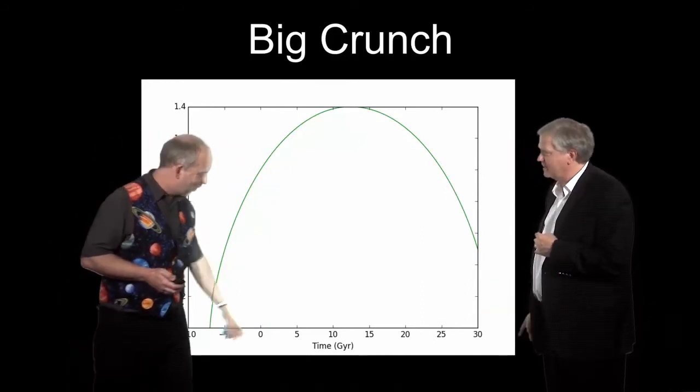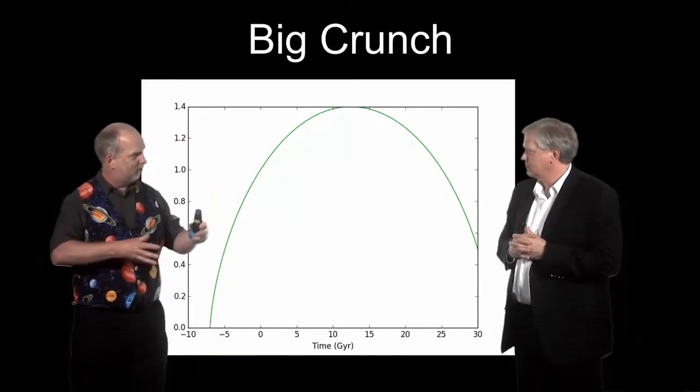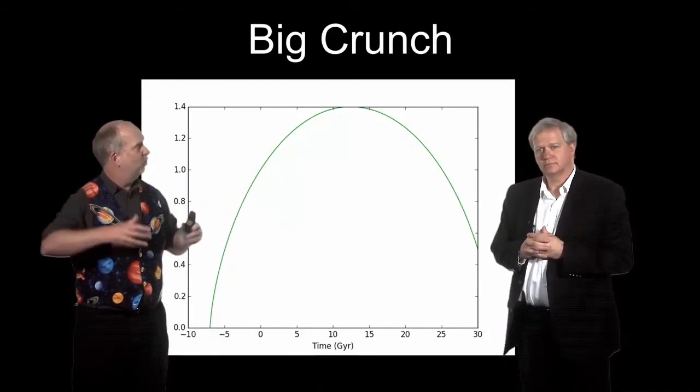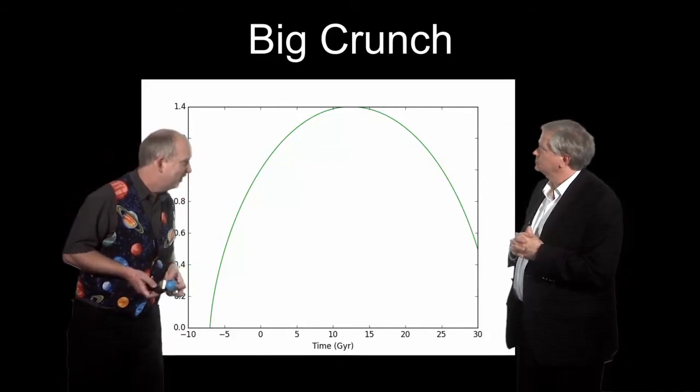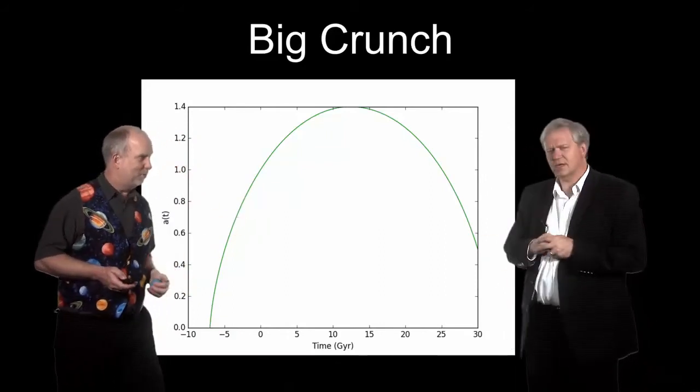Right. So the universe begins with a big bang here. But you seem to be hesitant to plot the Gnab-gib here, Paul, at the end, the big crunch. The program is set to go to 30. But yes, the universe will eventually come back to zero size at the end. So everything will expand, stop, come back together into what's often called the big crunch. Yep. The Gnab-gib, much better word. Gnab-gib being big bang spelled backwards.